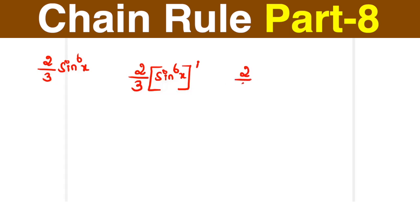So (2/3) × 6 × sin⁵x, because t⁶ on differentiation gives 6t⁵. The equivalent of which we have written here times the differentiation of sin x, which is cos x. Now see, I can simplify by striking this.